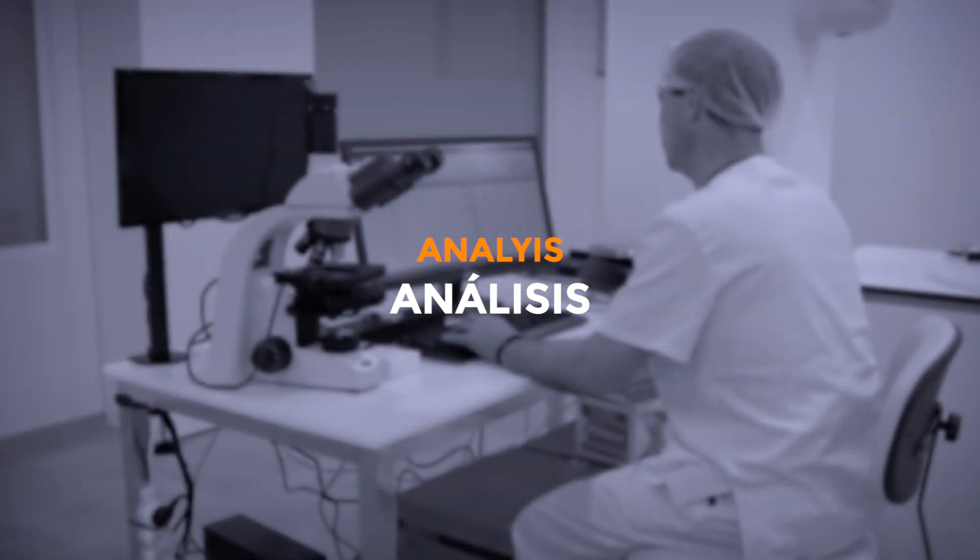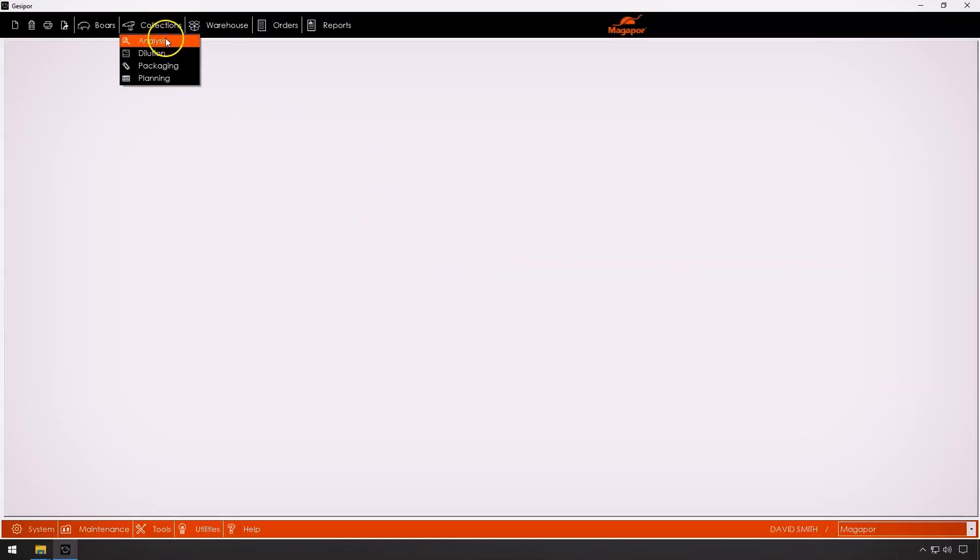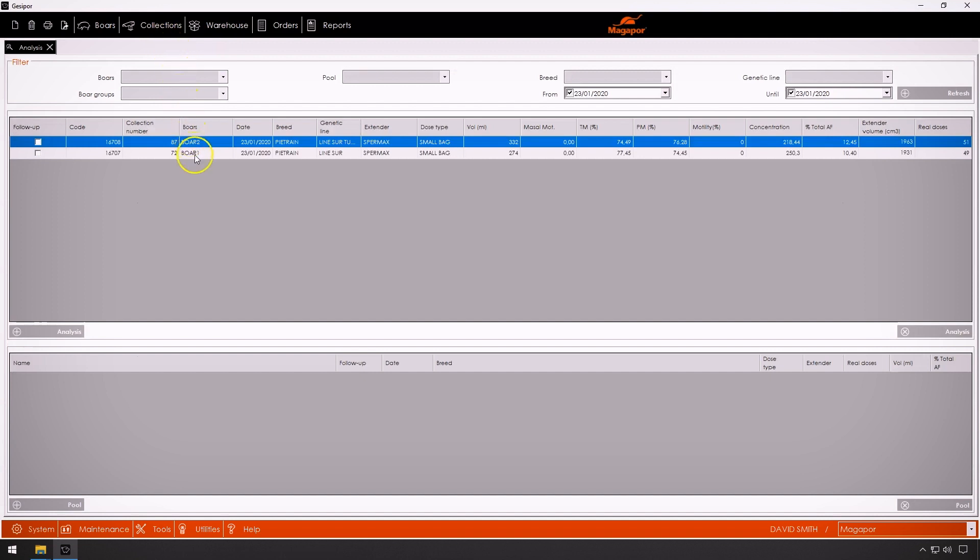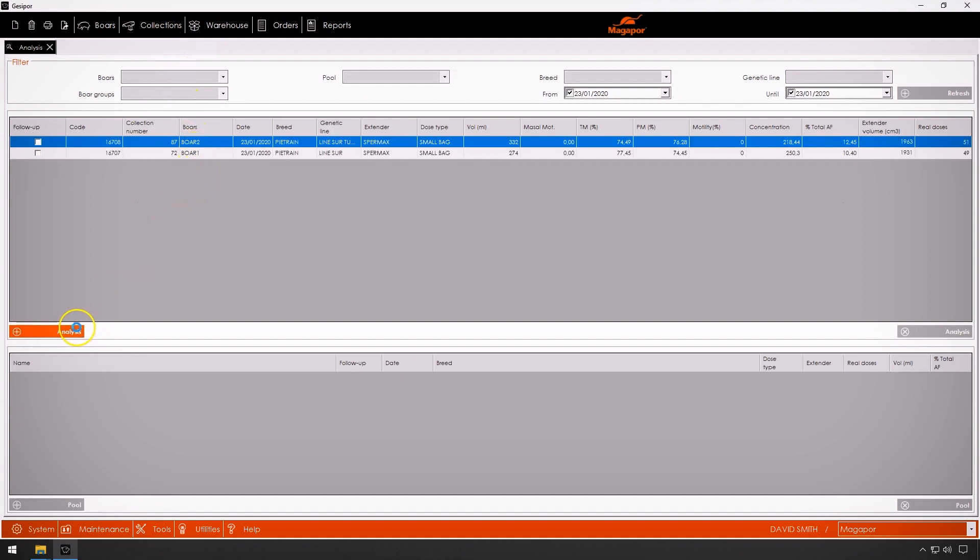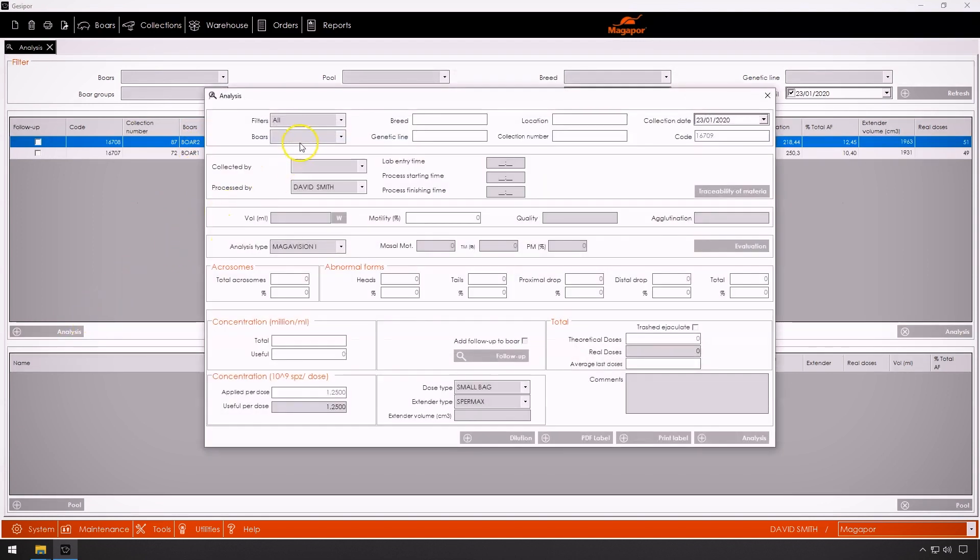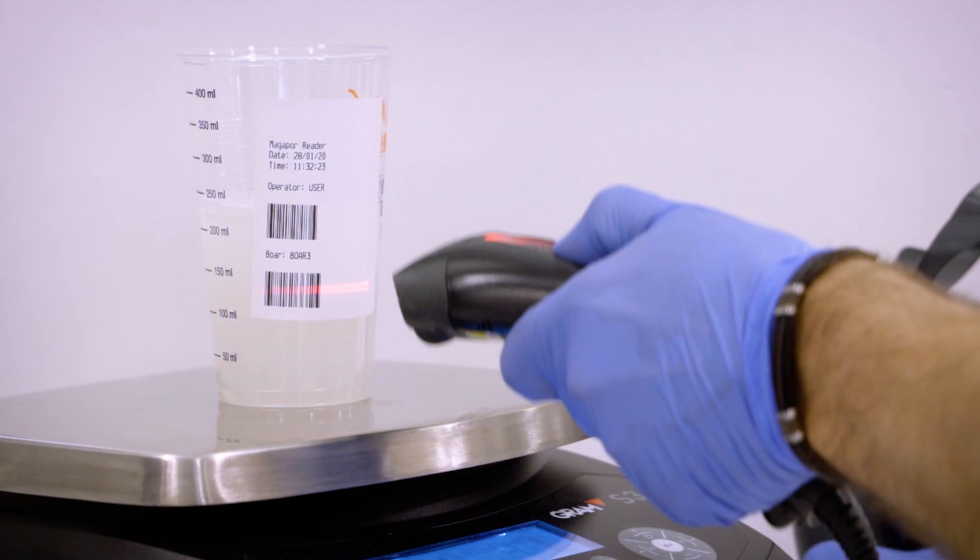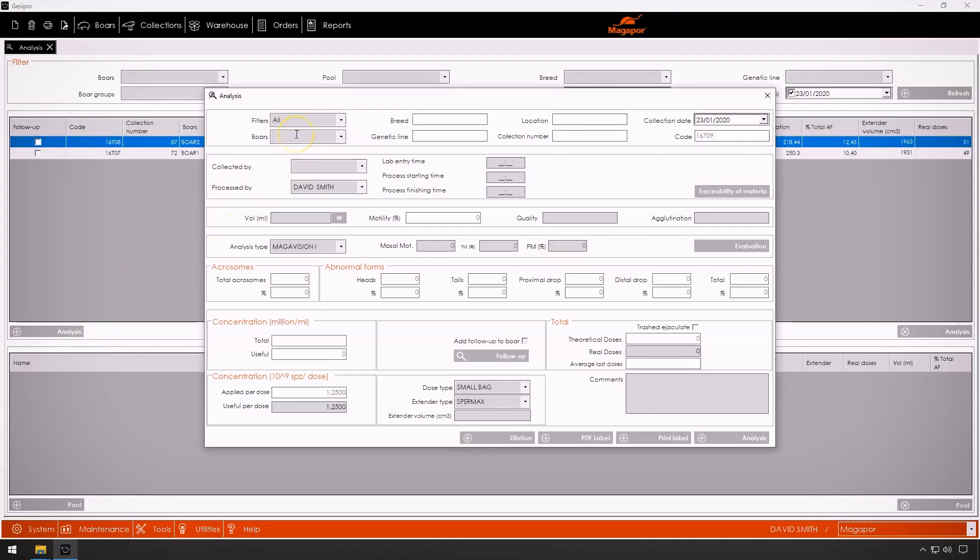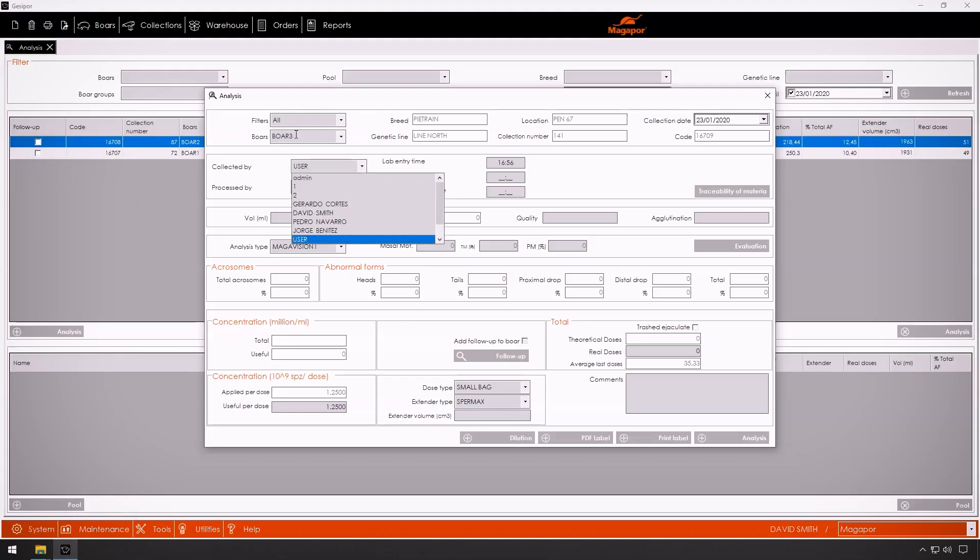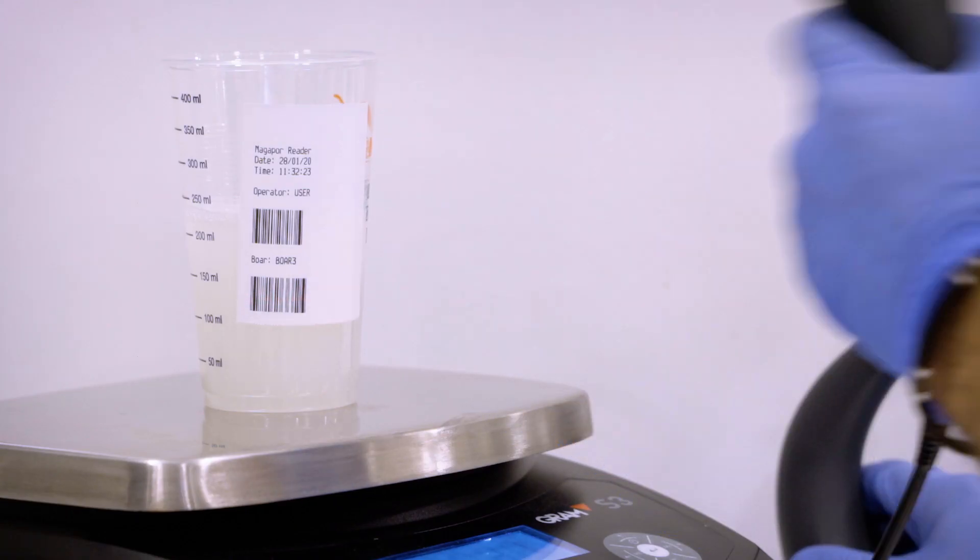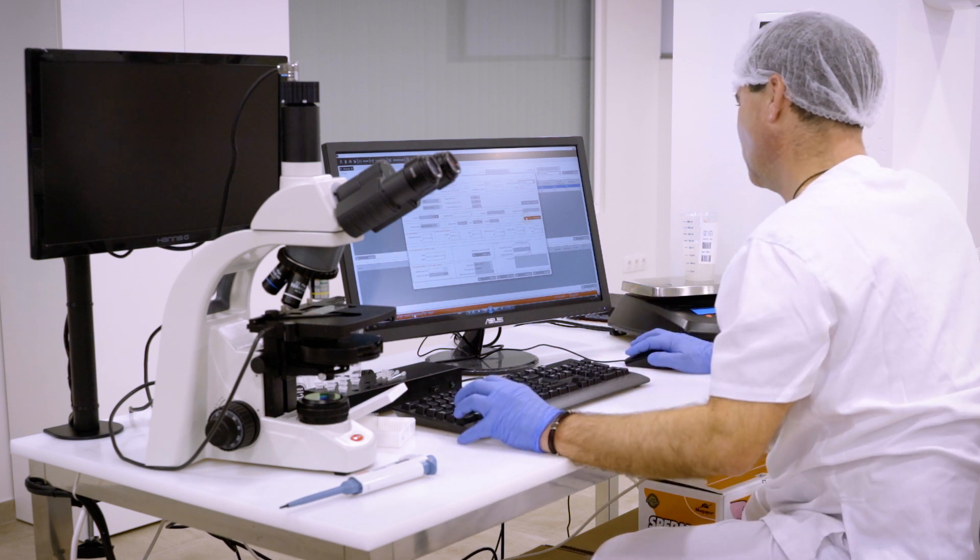For the analysis, Magapore has the Magavision artificial vision system, being the first CASA system designed exclusively for boar studs. By reading the barcodes of the identification label of the ejaculate, the identifier of the boar and the operator who has made the collection is automatically introduced. Also recorded are the analysis operator and the process start time and end time.